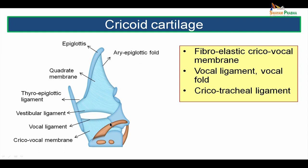The cricovocal ligament or conus elasticus is a membrane attaching from the inferior border of the thyroid cartilage to the cricoid cartilage. The upper thickened border of the conus elasticus is the vocal ligament. The quadrate membrane extends in the upper part of the larynx, and its inferior thickened border forms the vestibular ligament. The aryepiglottic fold connects the lateral margins of the epiglottis to the apex of the arytenoid cartilage. The corniculate and cuneiform cartilages lie within the aryepiglottic fold. Inferiorly, the cricoid cartilage is connected to the trachea by the cricotracheal ligament.